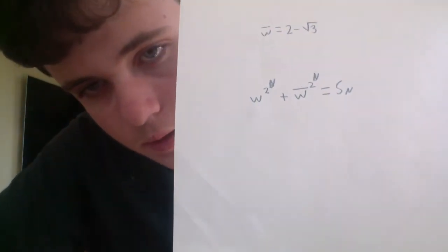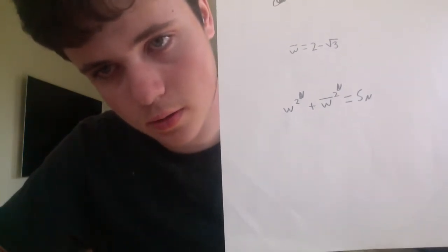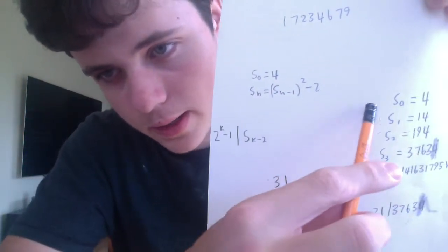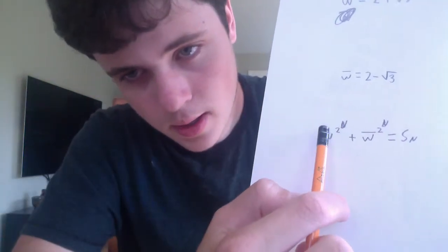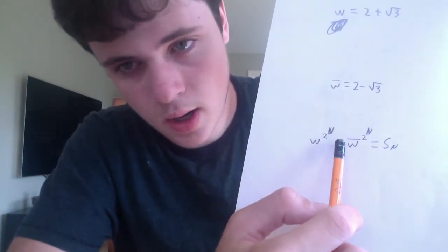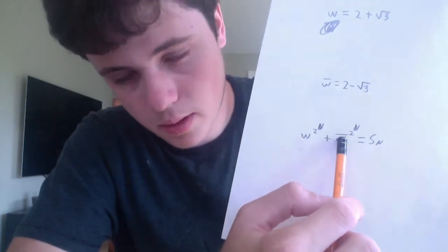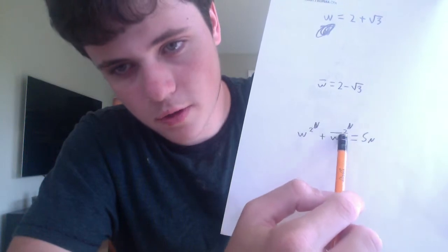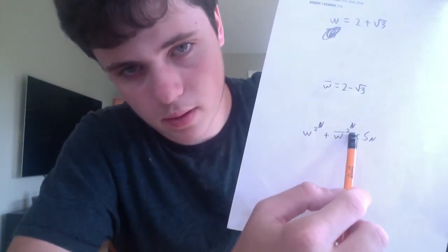What I have right here is a formula for S_n. W to the 2 to the n plus W-bar to the 2 to the n is equal to S_n. This formula is what we are going to be proving in this video. If we wanted to find S_4, we don't have to iterate — we can just plug 4 directly in: W to the power of 2 to the power of 4, plus W-bar to the power of 2 to the power of 4, equals S_4.